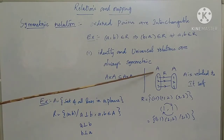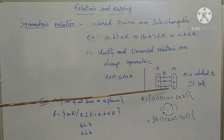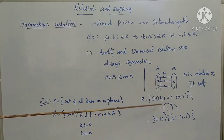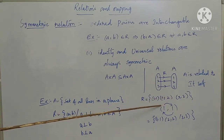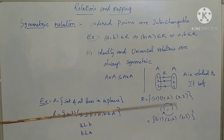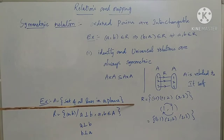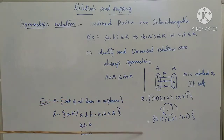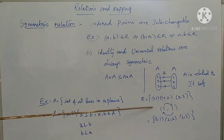The identity relation has ordered pairs (1,1), (2,2), and (3,3). When we interchange these ordered pairs, the result also gives us (1,1), (2,2), and (3,3). This relation is equal to our first relation, so this type of relation is called a symmetric relation.